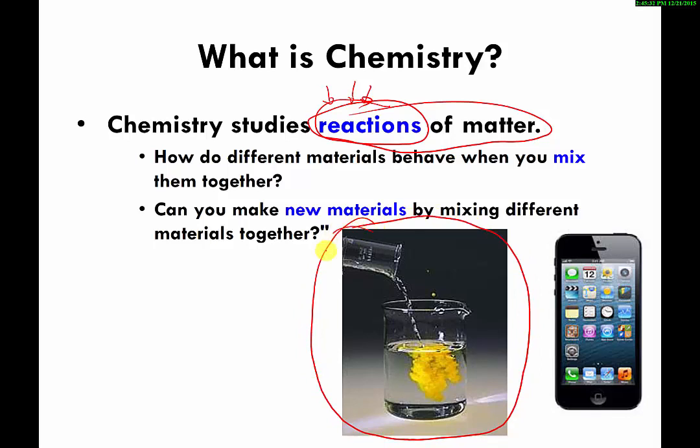An example of that is shown in this picture over here that I'm circling. Here's a clear liquid in this cylinder being poured into another clear liquid in this container down below. You would think that if you mix clear liquid number one with clear liquid number two, you would probably get just more clear liquid.